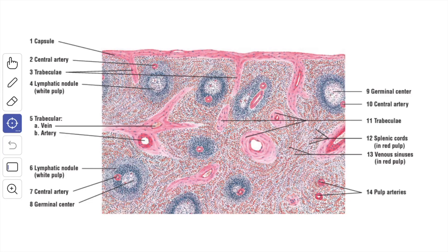Regarding the lymph vessels of the spleen, traditionally it was held that they are confined to the capsule and trabeculae. However, recent studies have shown that they are present in all parts of the spleen. The lymphocytes produced in the spleen reach the bloodstream mainly through the lymph vessels.